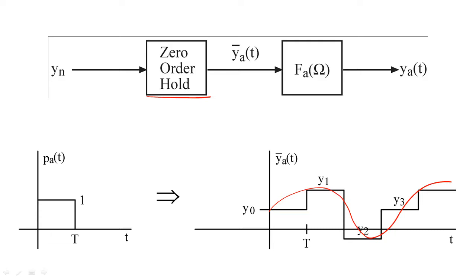To figure out what this smoothing filter needs to be, let's take a closer look at p sub a. Since p sub a is a rectangle in the time domain, p sub a of omega will be a sinc function in the frequency domain.